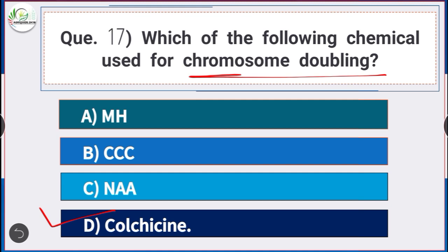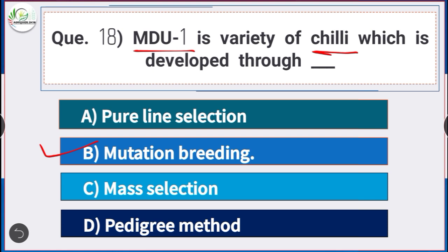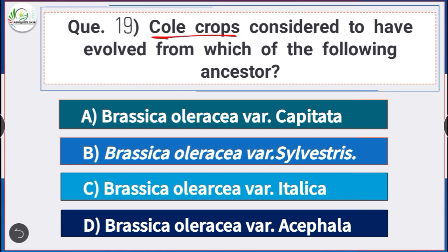Question number 18: MDU1 is a variety of chili which is developed through mutation breeding. Question number 19: Cole crops are considered to have evolved from which ancestor? Answer is option B — Brassica oleracea variety silvestris.